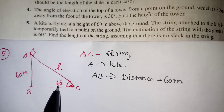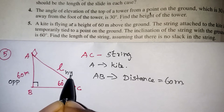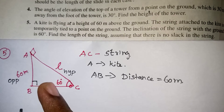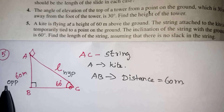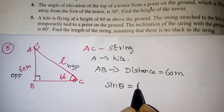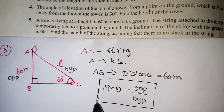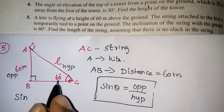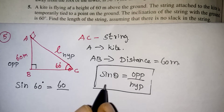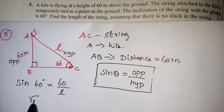The angle is given, the opposite side is given (60 meters), and they are asking for the hypotenuse — the string length. Since the question involves the opposite side and the hypotenuse, we use sin theta, because sin theta equals opposite divided by hypotenuse. So sin 60° equals opposite over hypotenuse, which is 60 over L. The value of sin 60° is root 3 by 2, giving us root 3 by 2 equals 60 by L.